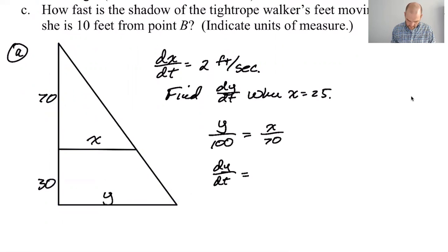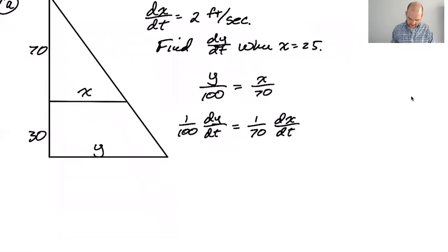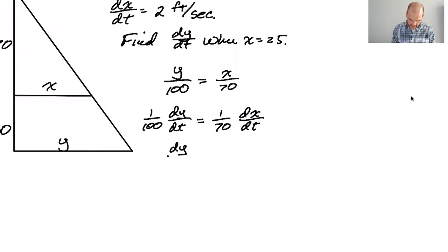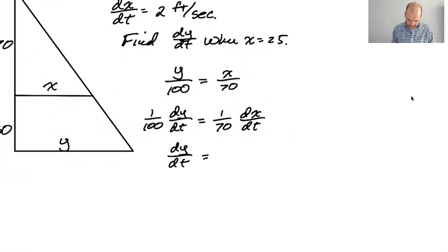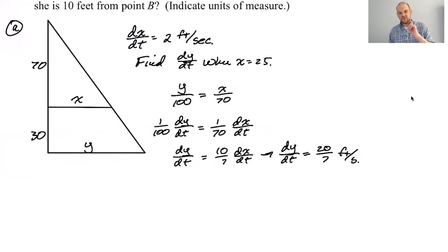So I'm going to say that y over 100 is equal to x over 70. I just did horizontal over vertical equals horizontal over vertical, and so that means that dy/dt is, well, 1 over 100 dy/dt is 1 over 70 dx/dt. Multiply by 100, I get 10 over 7 dx/dt. So dy/dt, she's going two, so 20 over 7 feet per second.